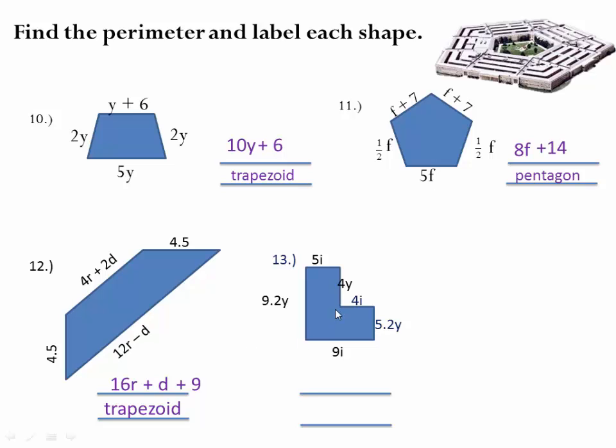On to number 13. Let's start with the i's. 4i and 5i is 9. There's another 9. That gets us 18 i's. There are y's left. Now let's see the decimals here. A .2 and a .2.